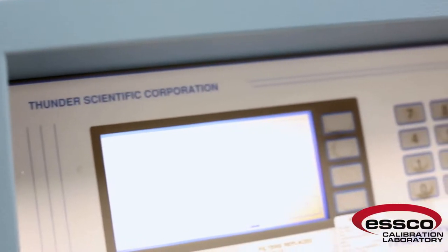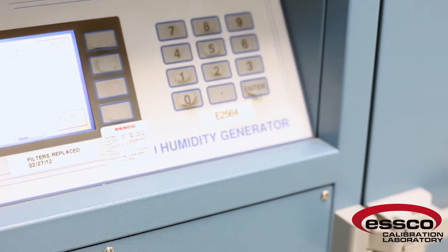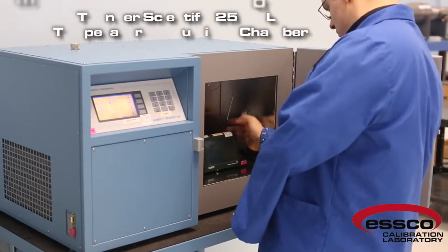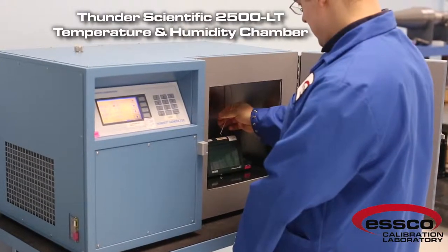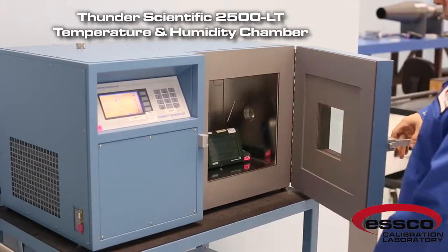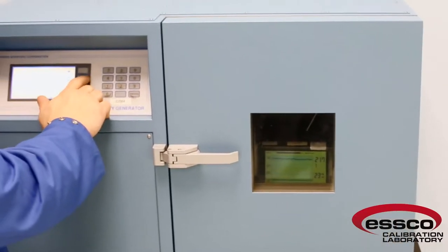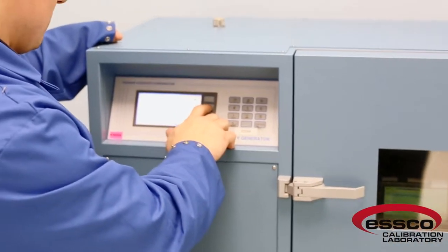For temperature and humidity sensors like data loggers and handheld units, we use our Thunder Scientific Temperature Humidity Chamber. The Thunder has a temperature range from minus 20 to 70 degrees C, with 0.06 degrees C accuracy, and a humidity range from 10 to 95% humidity, with 0.5% accuracy.